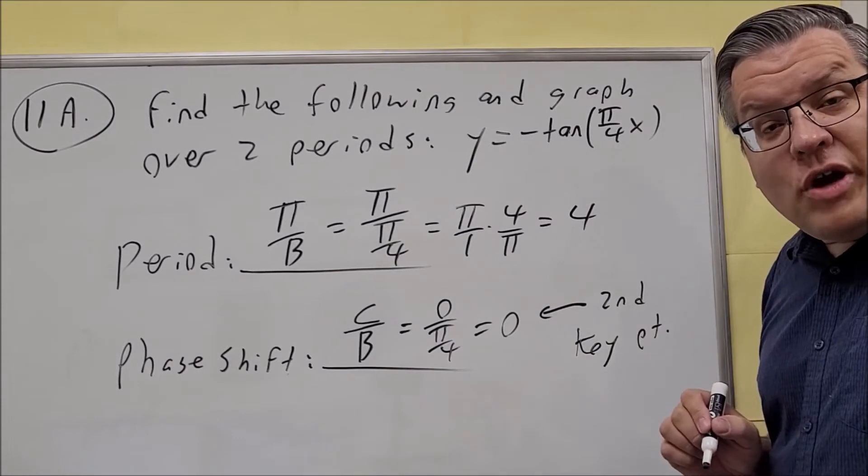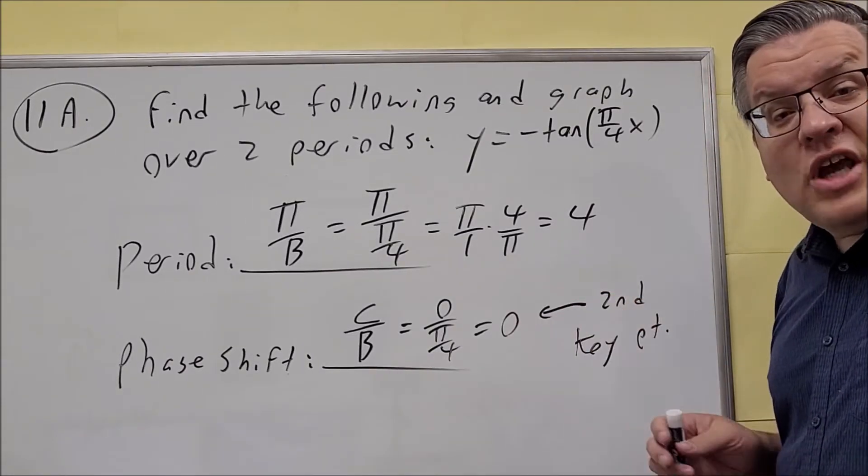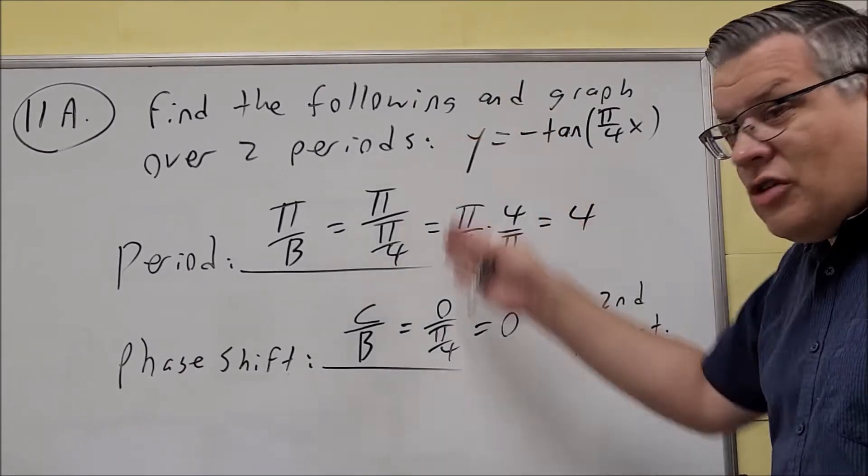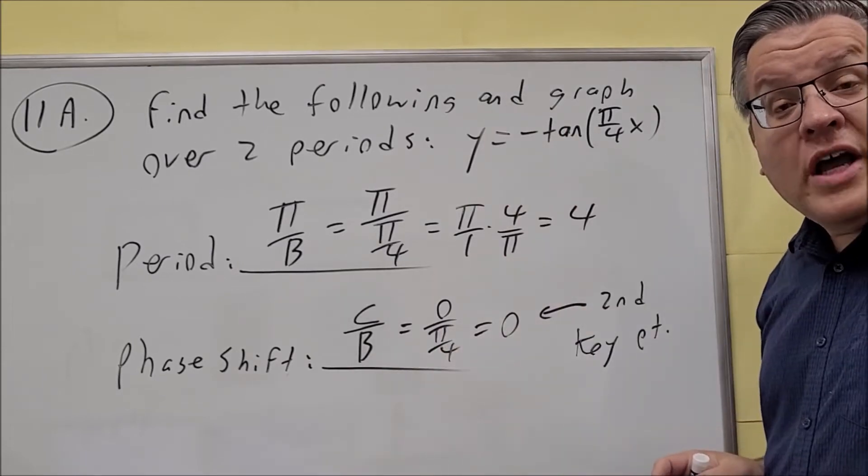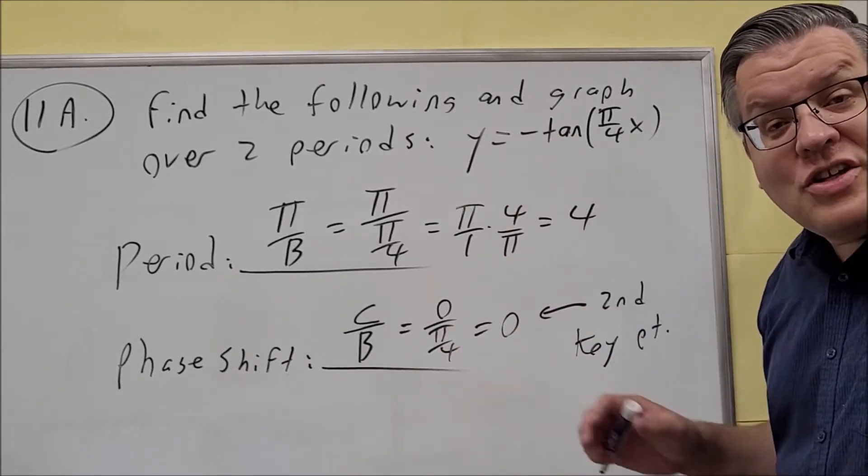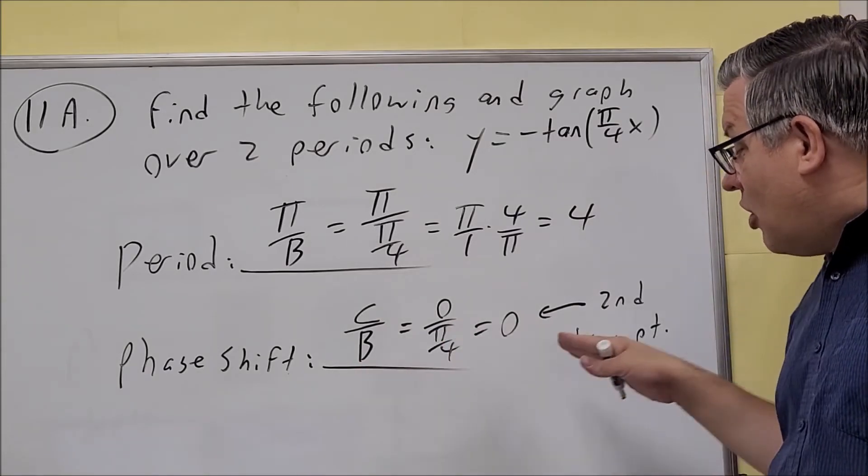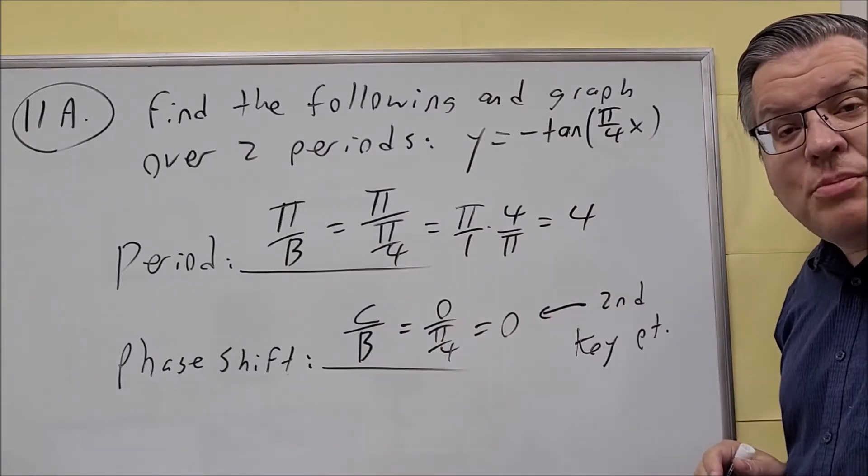If you're looking at the cotangent graph, the phase shift is actually the first key point and gives you the first vertical asymptote. But for tangent it's different. For tangent, the phase shift is always the second key point.